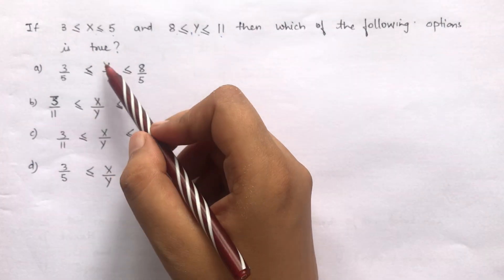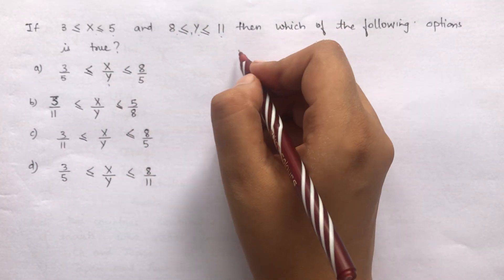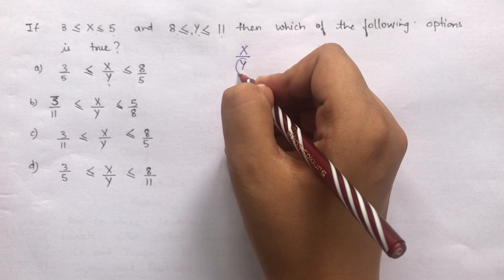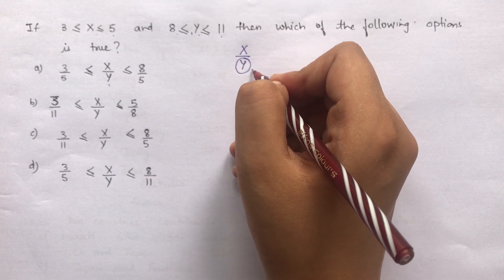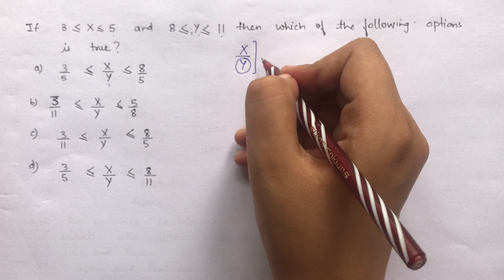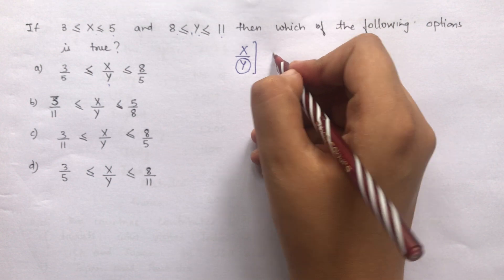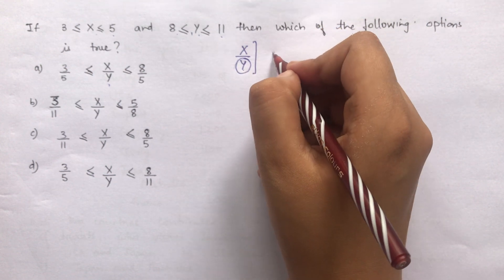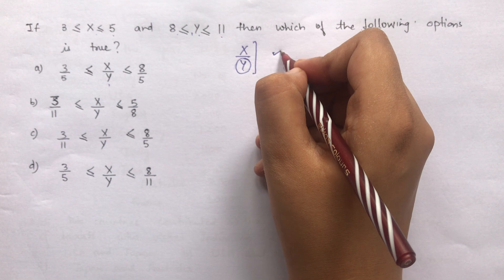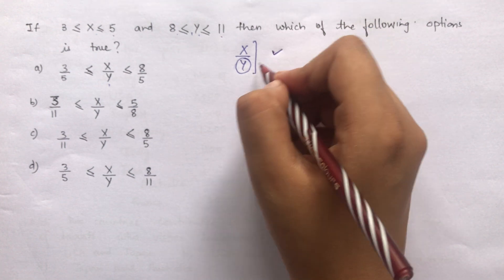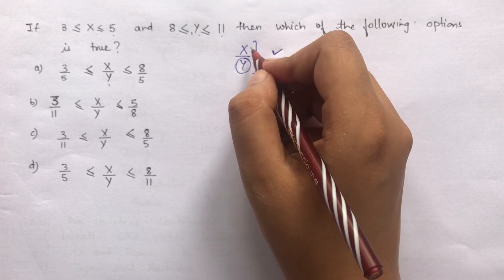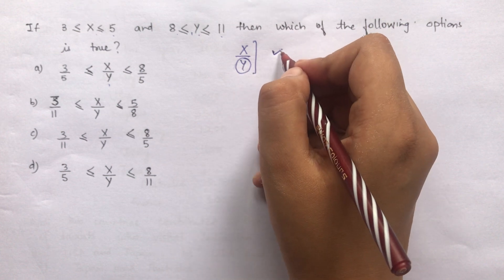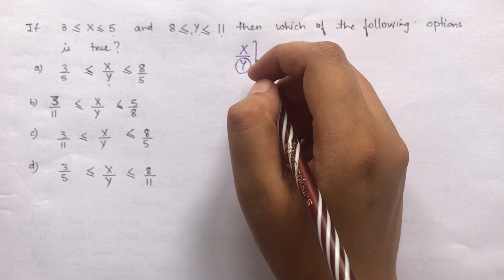This is a division question. You have to understand that when we divide a number — if y's value is more, i.e., the denominator is larger, then the overall fraction is smaller. And if y's value is less, the fraction is larger. This means if you divide a number with a big number, the value will be small. So you have to use this logic.